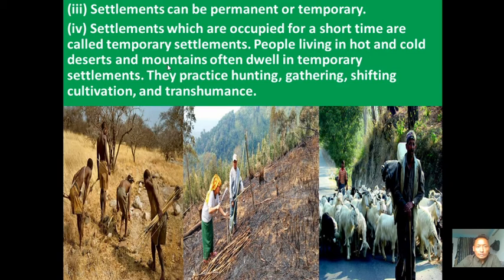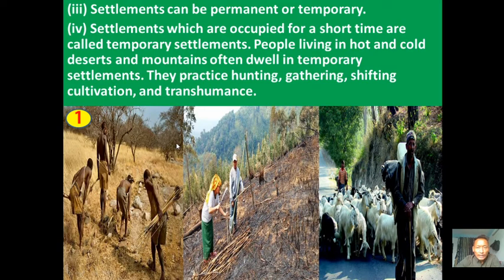In these regions, people practice hunting and gathering. Hunting involves catching animals using bows and arrows to get meat. Along with hunting, people gather fruits and roots from the earth. These activities are characteristic of temporary settlement areas.